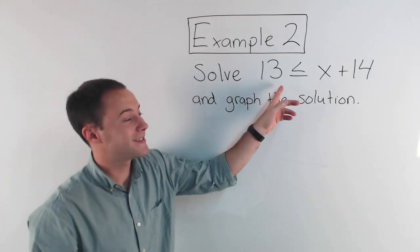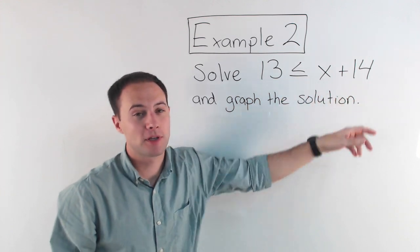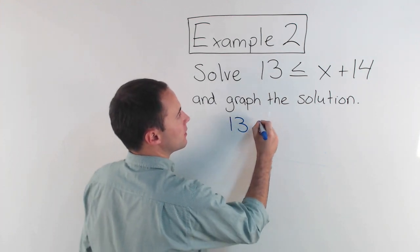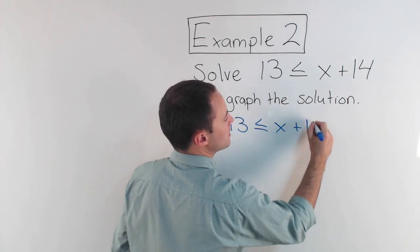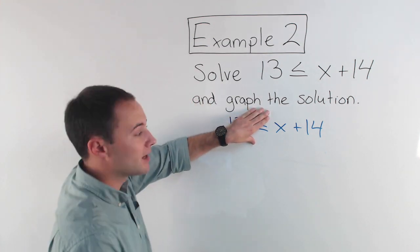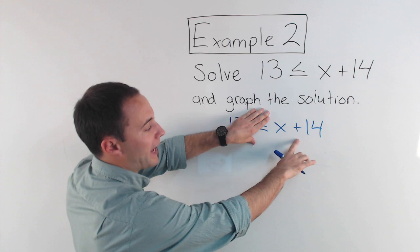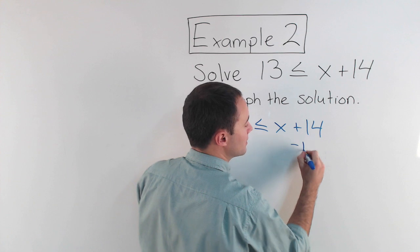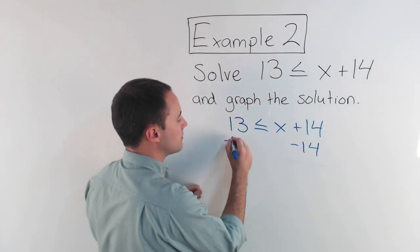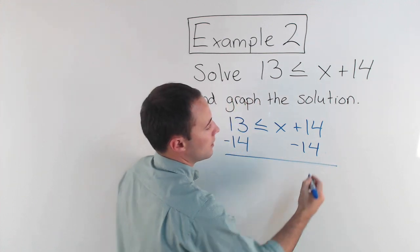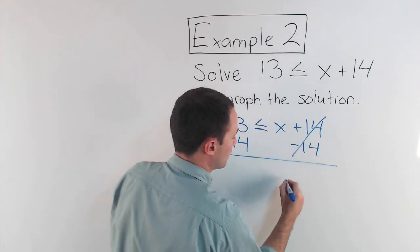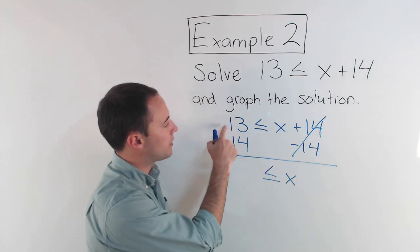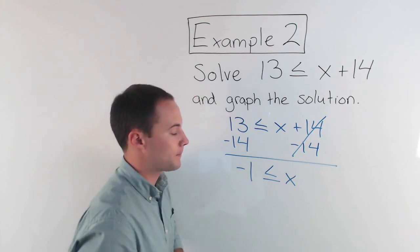Example 2. Solve 13 is less than or equal to x plus 14 and then graph the solution. So same thing. I'm going to try to get the variable alone. 13 is less than or equal to x plus 14. So I'm looking over here. That's where I'm concentrating. x is not alone. We're adding 14 to it. So to get rid of that plus 14, I do the opposite. I subtract 14. Right? Anything I do to one side, I do to the other. Minus 14 here. That goes away. I'm left with x alone, which is my goal. On the right, I still have the less than or equal to, 13 minus 14 would give me negative 1.